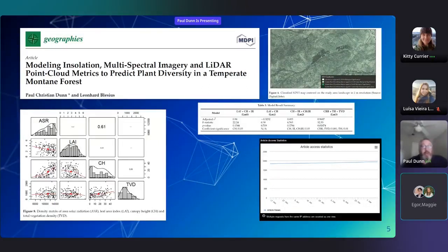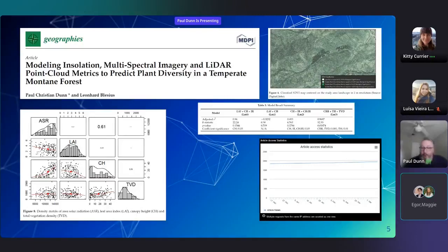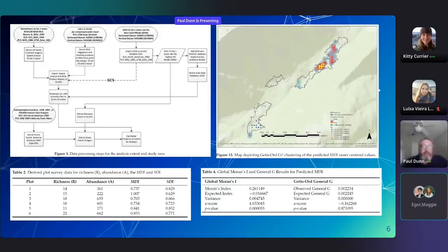We modeled insolation with digital elevation models, the solar model, multi-spectral imagery, and LiDAR point cloud metrics to predict biological phenomena in a forest. As you can see on the lower left, we looked at area solar radiation, leaf area index, canopy height, and total vegetation density, among others — each coming from different sensors. We came up with a model integrating canopy relief ratio, total heights, and total vegetation density to examine species diversity, ultimately focusing on MDI.